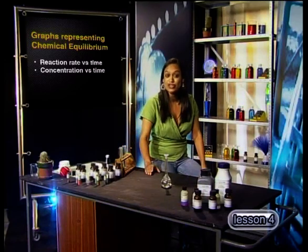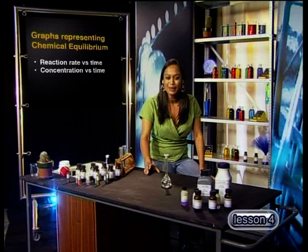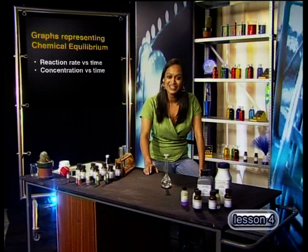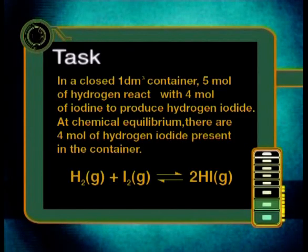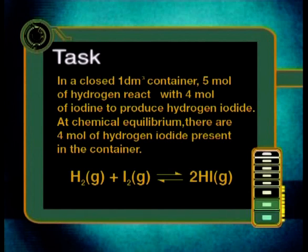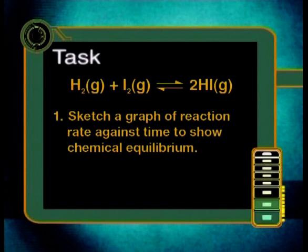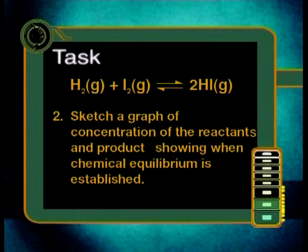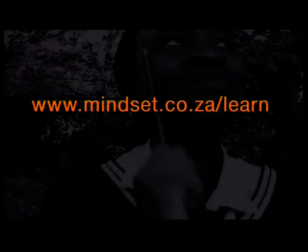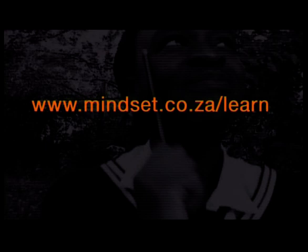I hope you find these graphs useful in describing, representing, and interpreting what happens in a chemical equilibrium. Here's today's task. In a closed one decimeter cubed container, five moles of hydrogen react with four moles of iodine to produce hydrogen iodide. At chemical equilibrium, there are four moles of hydrogen iodide present in the container. One: sketch a graph of reaction rate against time to show chemical equilibrium. Two: sketch a graph of concentration of the reactants and products showing when chemical equilibrium is established. For more information, please visit our website at www.mindset.co.za/learn.